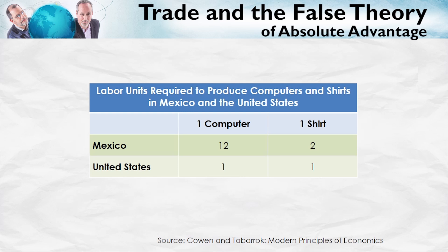From the absolute advantage theory of trade, it may seem obvious that there will be no trade here — that the United States will out-compete Mexico on all margins. After all, the United States in this example is much more productive at producing computers and also more productive at producing shirts than Mexico. So we might think the United States is so much better at producing both that there's no reason to trade with its less productive neighbor.